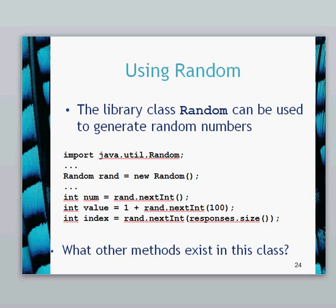The Random object has a number of different methods which can be performed on it. You've got rand.nextInt, which returns an integer number within the range of integer numbers, so that's not very useful because that includes negative numbers as well. The next line, int value equals one plus rand.nextInt(100), will give you 1 to 100 because we've got the 1 plus in there.